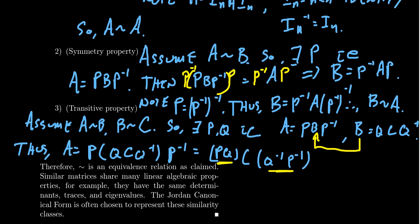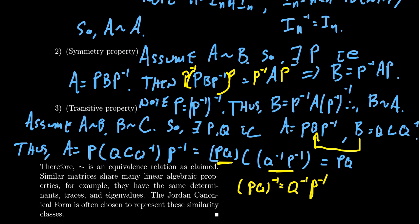The order of operations matter when it comes to matrix multiplication — multiplication is non-commutative. So when you take the inverse, you actually have to go backwards. Note that (P Q) inverse is equal to Q inverse P inverse. This is called the shoe-sock property. Because if you reverse the order — if you put your socks on then your shoes — you have to take your shoes off then your socks to invert it. And because of this observation, we see that this is equal to P Q times C times (P Q) inverse.